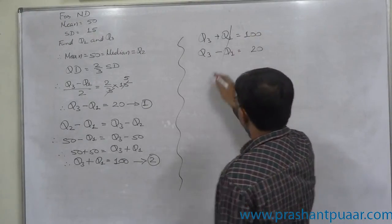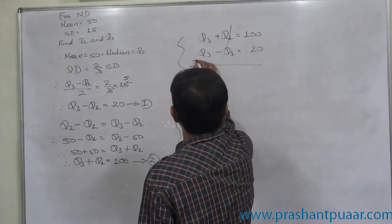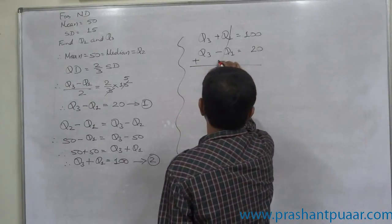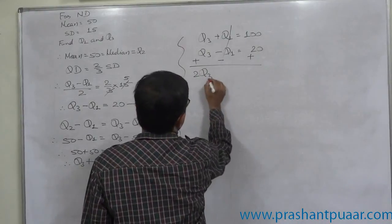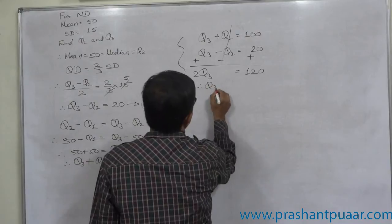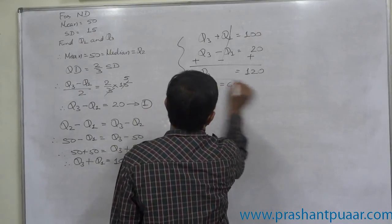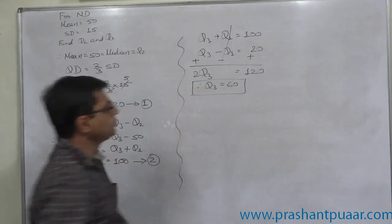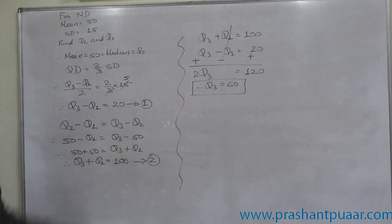Yes, cancellation, sorry, we are going to add the first one. 2Q3 equals to 120. So, Q3 equals to 60. Now, substitute Q3 equals to 60 in any of the two equations.